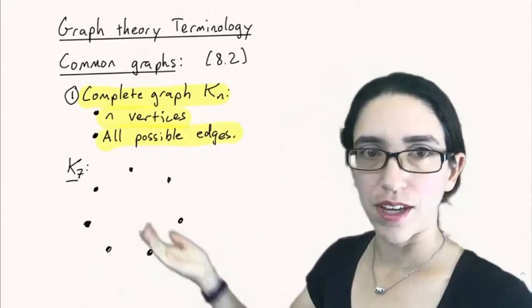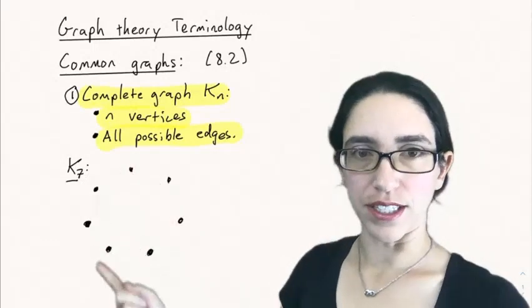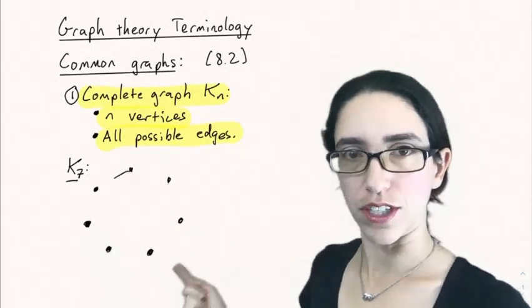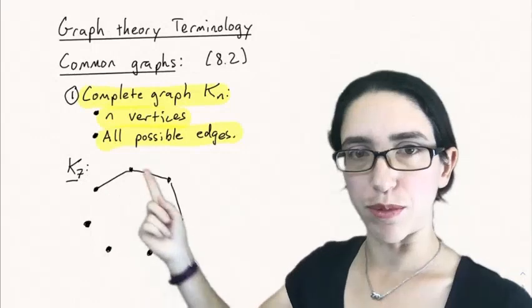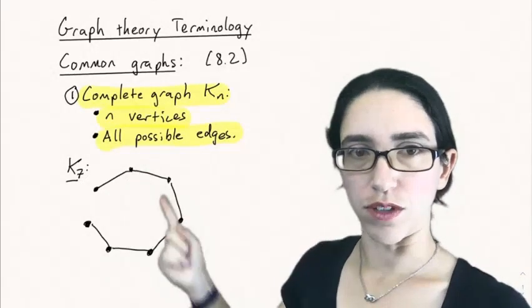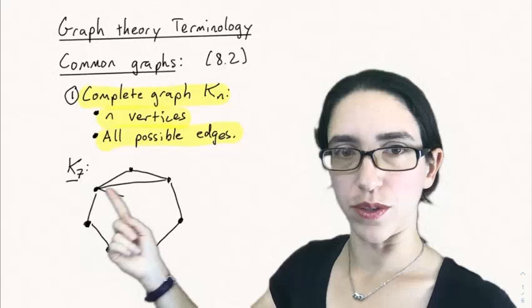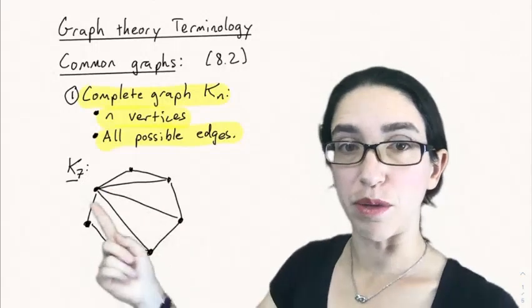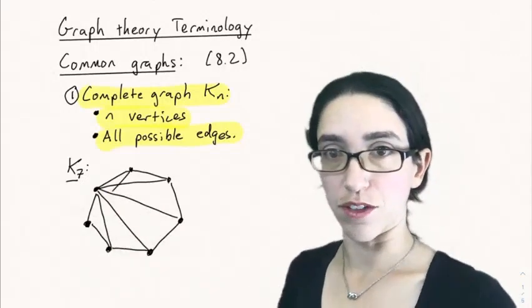So here's the complete graph. K7 is the graph on seven vertices. Here's seven vertices where we draw every possible edge between all the vertices. So not only just going around the circle, but also all the possible diagonals coming from every vertex to every other vertex.